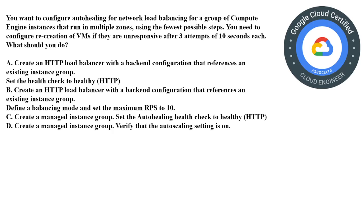Moving on to the next question. You want to configure auto healing for network load balancing for a group of Compute Engine instances that run in multiple zones, using the fewest steps possible. You need to configure recreation of VMs if they are unresponsive after three attempts of 10 seconds each. The options are: A) Create an HTTP load balancer with a backend referencing an existing instance group, select a health check; B) Create an HTTP load balancer, define a balancing mode and set maximum RPS to 10; C) Create a managed instance group, set the auto healing check to healthy; D) Create a managed instance group, verify the auto scaling setting is on. The correct answer is option C: create a managed instance group and set the auto healing check to healthy.